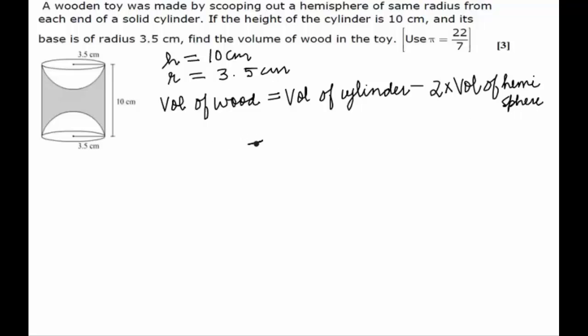On substituting the formula, I get πr²h minus 2 times 2/3 πr³. First of all, we take πr² common out. We are left with h minus 4/3 r.